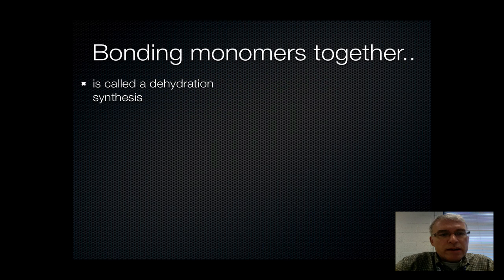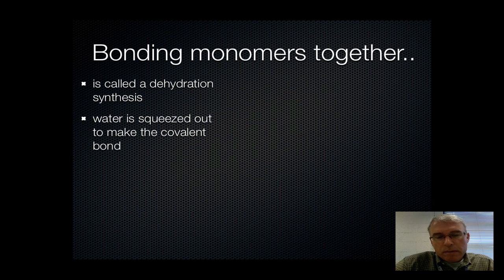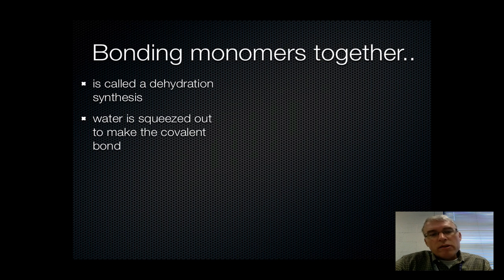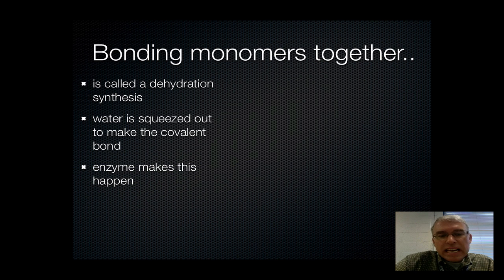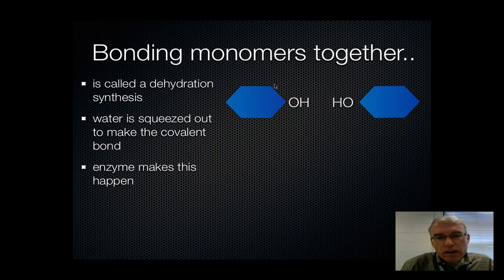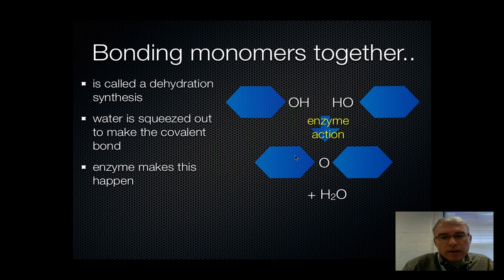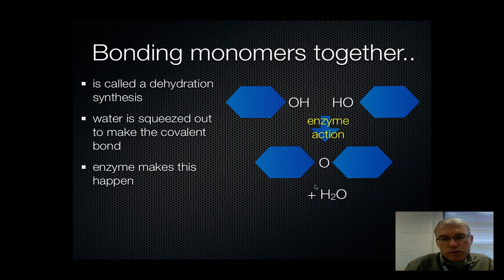To hold monomers together, you've got to build a special kind of bond. This special kind of bond is built through a process called dehydration synthesis, which simply means that the molecules are being dehydrated in the sense that water is being squeezed out or produced. This is accomplished by enzymes whose job it is to put these molecules together. So if we have two monomers — a blue monomer with an OH group and another identical one with an OH group — and we squeeze them together using an enzyme, we produce a water molecule. We take an OH from one and an H from the other, and OH plus H gives you water. So this type of bonding process is called dehydration synthesis, and it produces a little bit of water as a side effect.